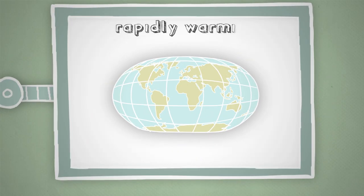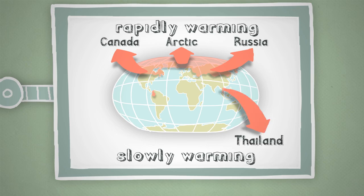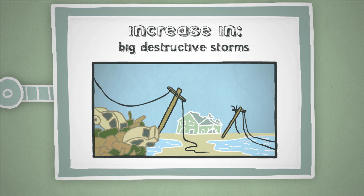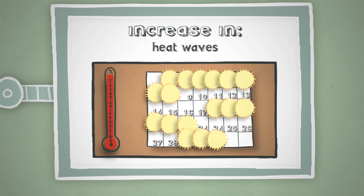For instance, as predicted, places in higher latitudes, like Canada, Russia, and the Arctic, are warming more rapidly than tropical places such as Thailand or Colombia. Other scientific predictions are coming true as well, like an increase in big, destructive storms, increased drought in dry regions, and longer, hotter heat waves.